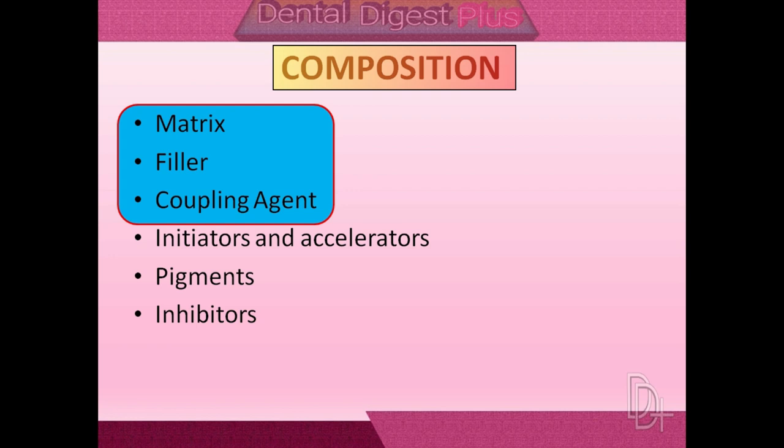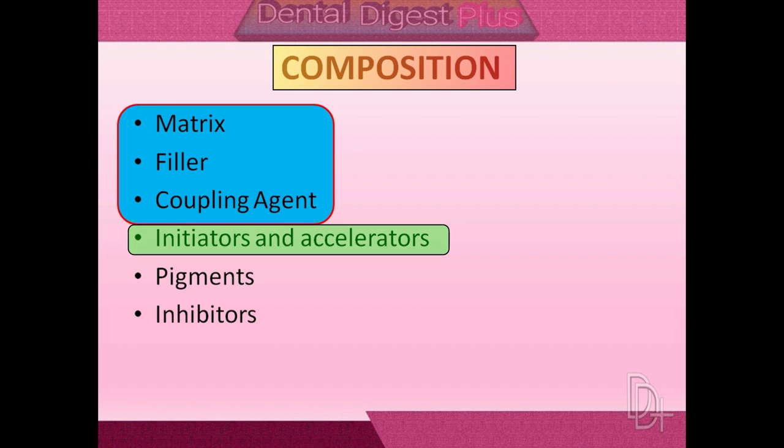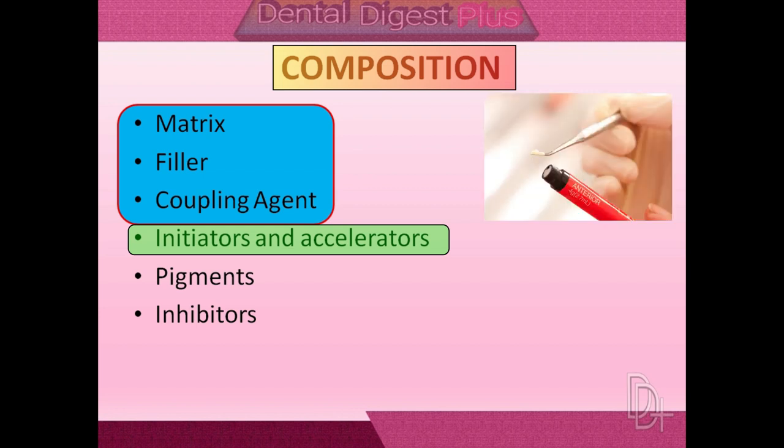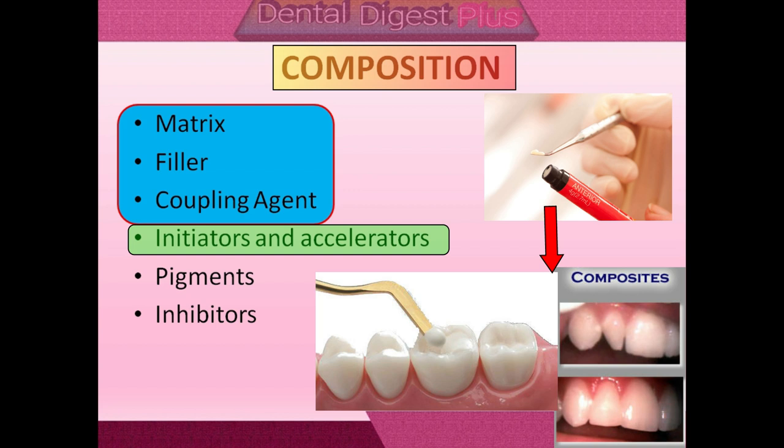Now let's take a look at the composition of dental composite material. Dental composite is composed of a resin matrix and filler materials. Coupling agents are used to improve adherence of resin to filler surfaces. These three are the main components of composite resin. Composites also contain an activator-initiator system required to convert the resin paste from a soft moldable filling material to a hard durable restoration.